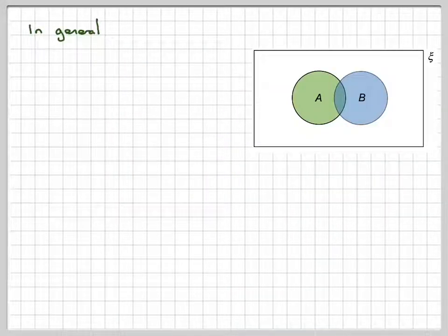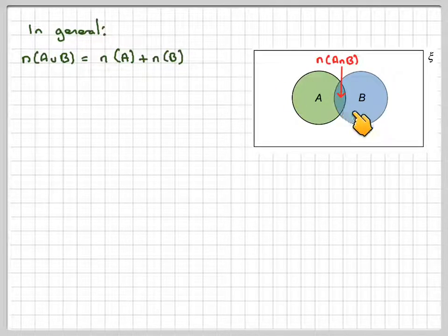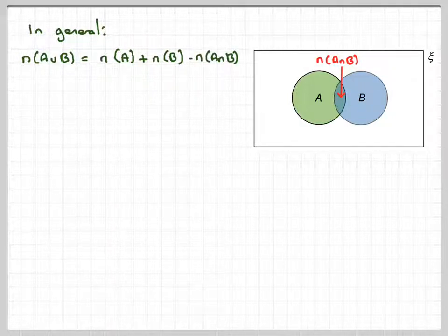So let's establish some rules. In general, if we've got intersecting sets, there's a number in A intersection B. Then in sets, we have number of A union B is equal to the number in A plus the number in B. And then because you've already counted the number in A intersection B once, you have to subtract it.